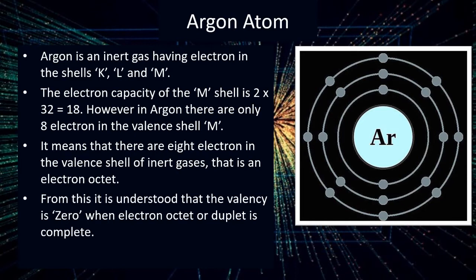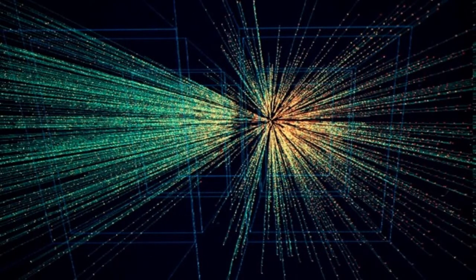Helium, neon and argon are inert gases — they do not combine with any other atom. Hence their valency is zero. We understand that valency is zero when the electron octet or duplet is completely filled. Except for inert gases, the electron duplet or octet is incomplete, meaning all other atoms have a tendency to combine with other atoms.